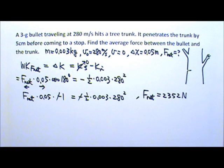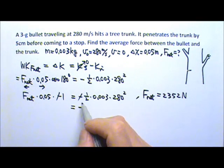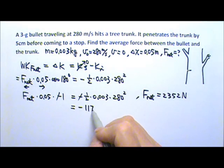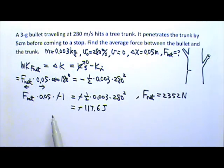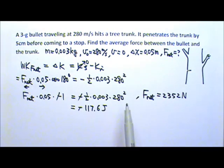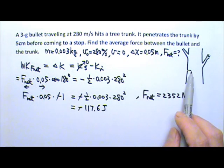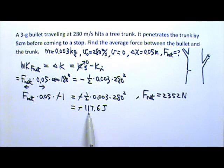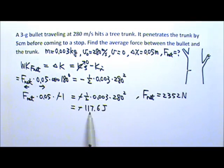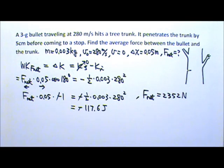So we do expect to have a large force. The work done by the net force is negative 117.6 joules. The negative sign makes sense: to stop the bullet, you have to take all that kinetic energy away. If you're taking energy away, the work you do is negative. All of that equals the initial kinetic energy, ½mv². To take all that energy away, this is how much work you have to do — negative 117.6 joules.